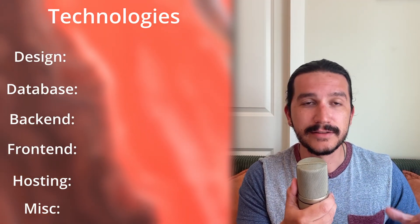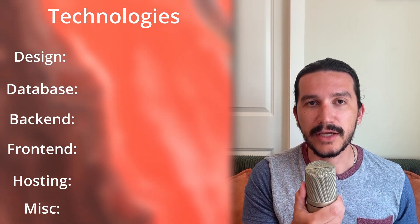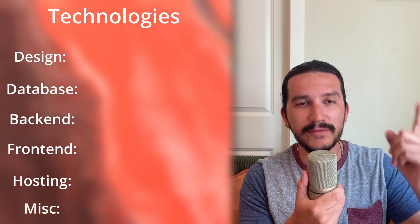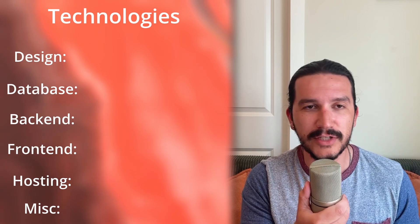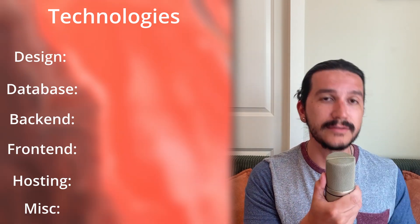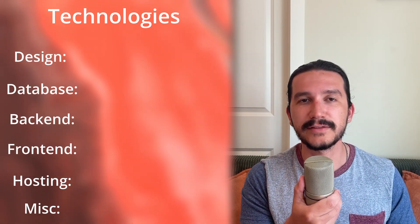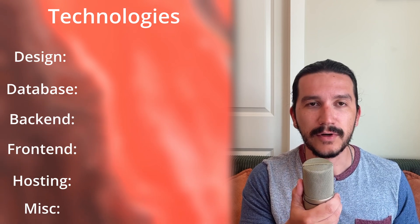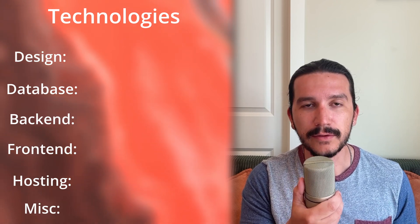I'm going to go through these in the same order that I did in my 11 steps that it takes to build a software application process. So if you haven't seen that video, definitely check it out after this. I'm essentially going to walk through every single piece of that process that involves technology and describe the ones I'm using for Dinnerbee. Starting off, let's talk about UX/UI design.